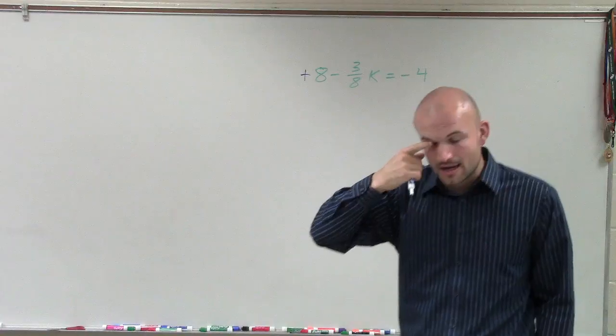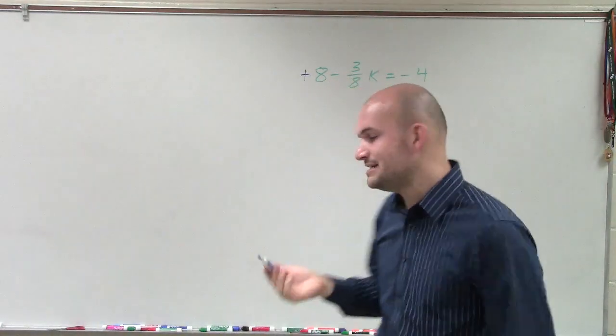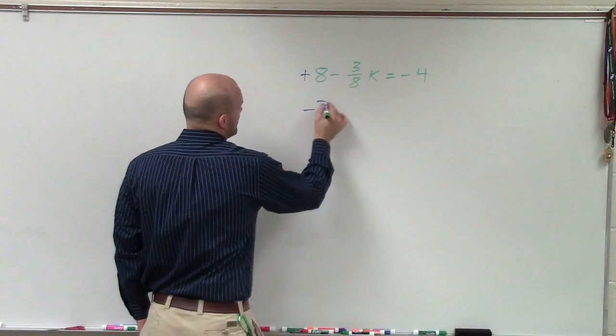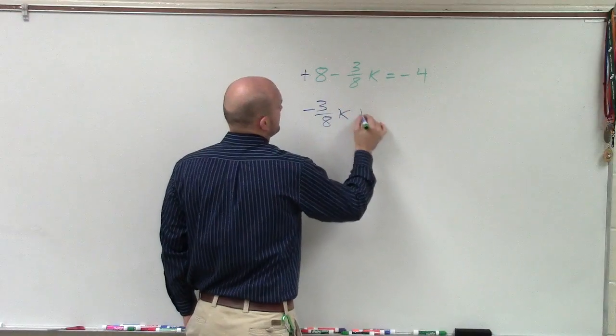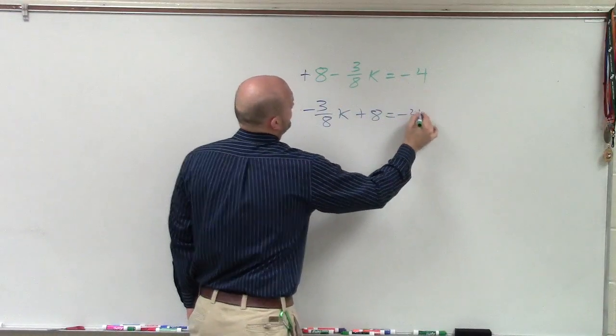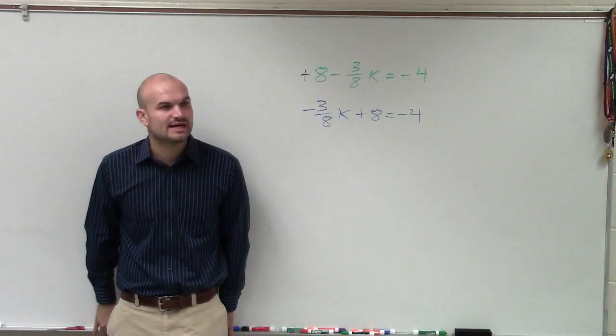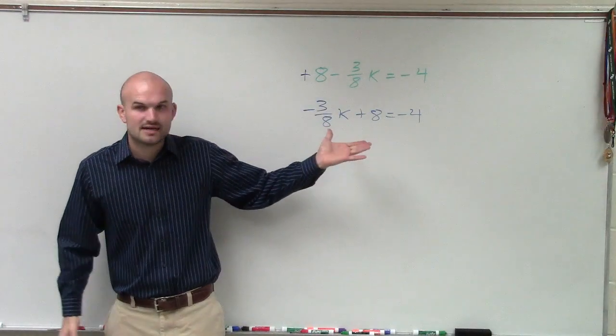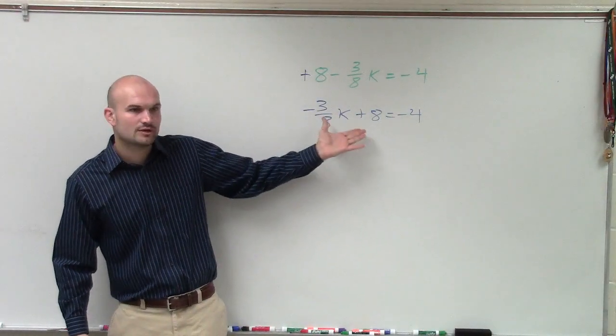So to make this a little easier to understand, what I'll do is I will rewrite this. I'll just switch around the 8 and the negative 3/8 k. Now, is this still the exact same equation? I mean, the same value of the equation?